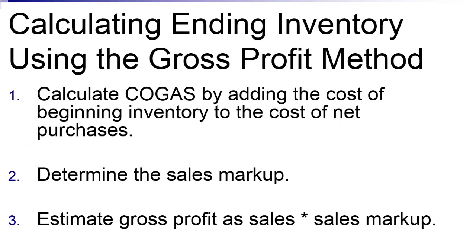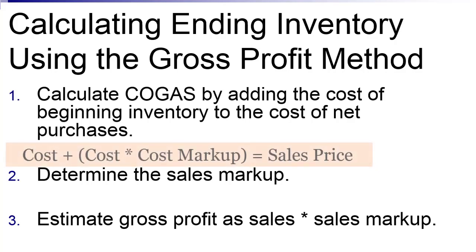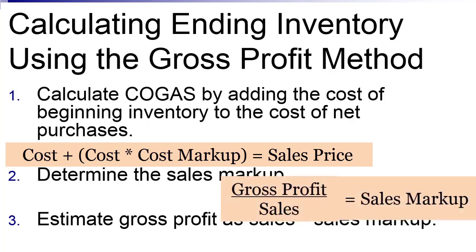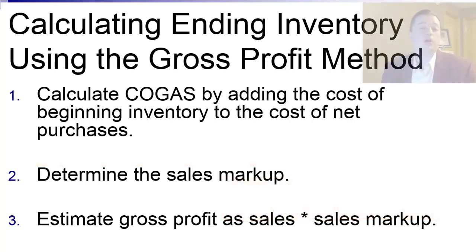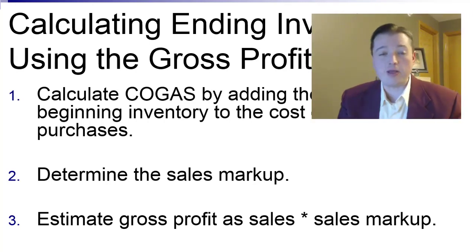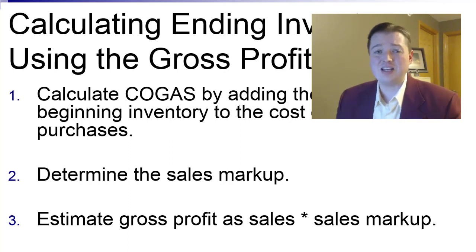First, we calculate cost of goods available for sale as we've done many times: beginning inventory plus net purchases at cost. Next, we figure out our sales markup. Sales markup is different from cost markup. Cost markup means you take your cost plus a given percentage to set the sales price. A sales markup is what portion of that sales price is profit. The problem is many companies use a cost markup, so I have to convert it.